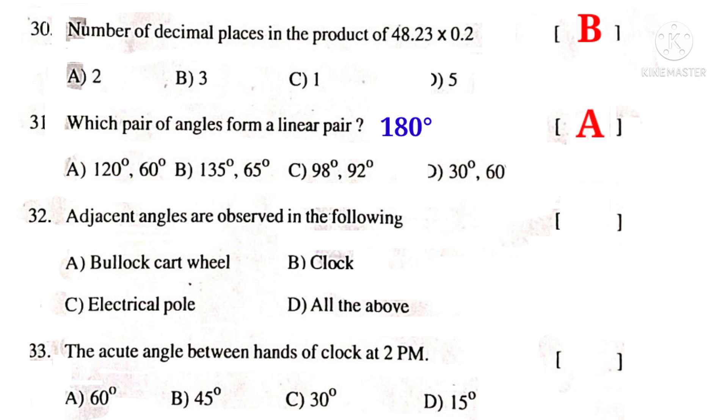Adjacent angles are observed in the following: Bullock cart wheel, clock, electric pole, all the above. In all of the above figures, we observed adjacent angles. So, the correct choice is D.